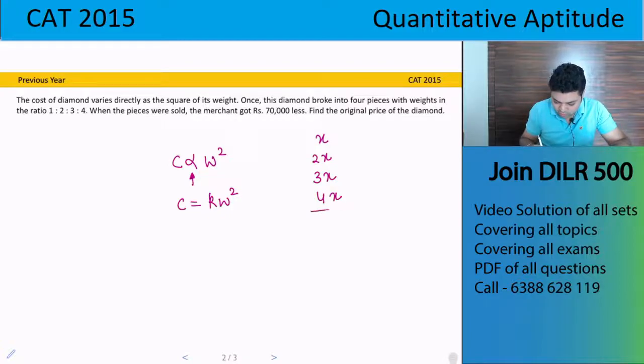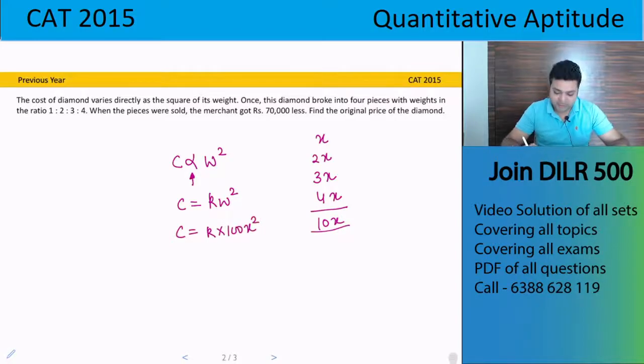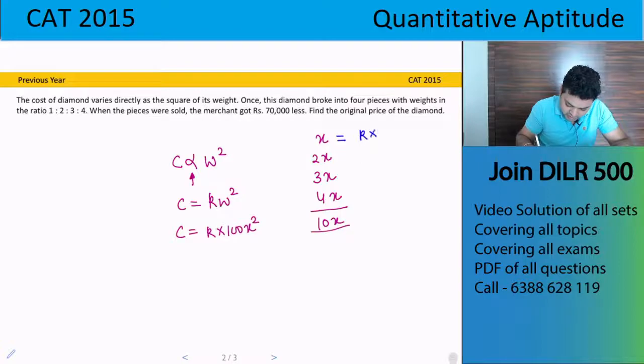So total weight of diamond is 10x. So initial cost is k into 100x square. And here the individual pieces cost is k into x square, 2x is k into 4x square, 3x is k into 9x square, and here the cost of 4x is 16x square.